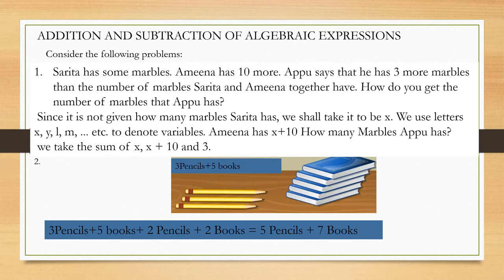Same objects can be added together. Therefore, we can write it as 5 pencils and 7 books on the table. In the same manner, we can add two algebraic expressions also. If we have like terms, we can combine them together — just like identical objects, like terms can also be combined together.